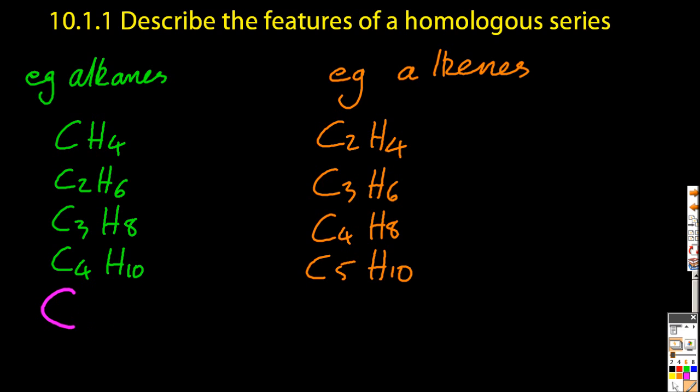So the first four alkanes are there, and you can see that you could work out the fifth one just by following the pattern, C5H12. And in fact, the general formula can be used to work out any alkane you want. That's CnH2n plus 2 is the general formula for alkanes.